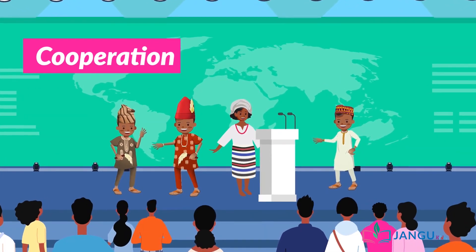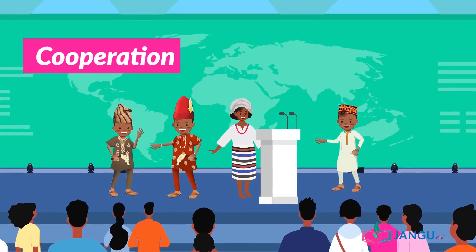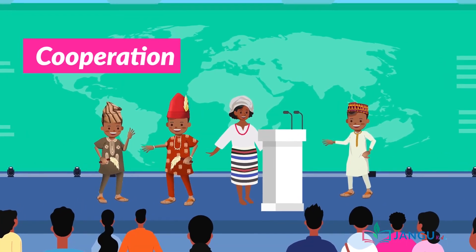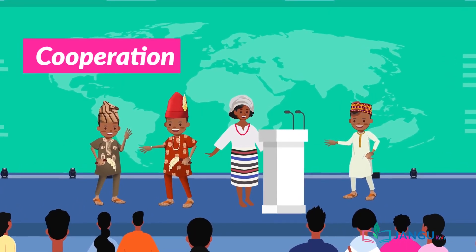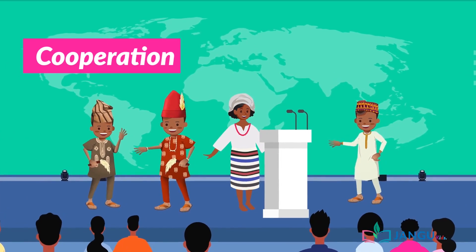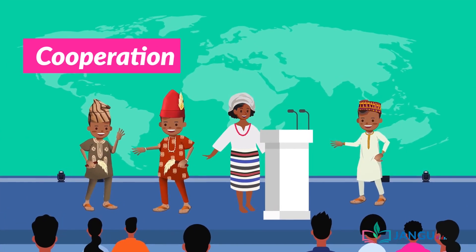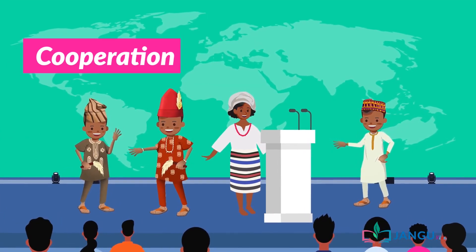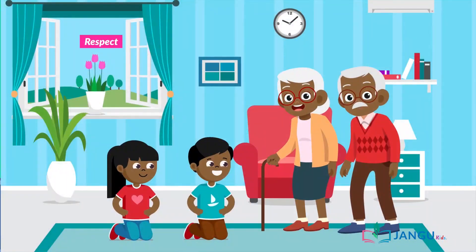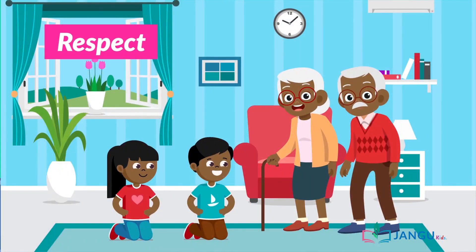Cooperation — every member of the community must see his neighbor or fellow citizen as an important part of the team. They have to fully cooperate with each other to help develop the community and move the community forward in terms of achievements of goals and objectives of the community.